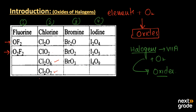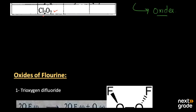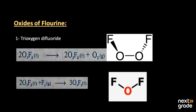Bromine can produce three oxides: Br2O, Br2O2, and Br2O3. Likewise, iodine can produce three oxides: I2O4 (tetraoxide), I2O5 (pentoxide), and I4O9. Now let's look at the preparation — how we can form these oxides.